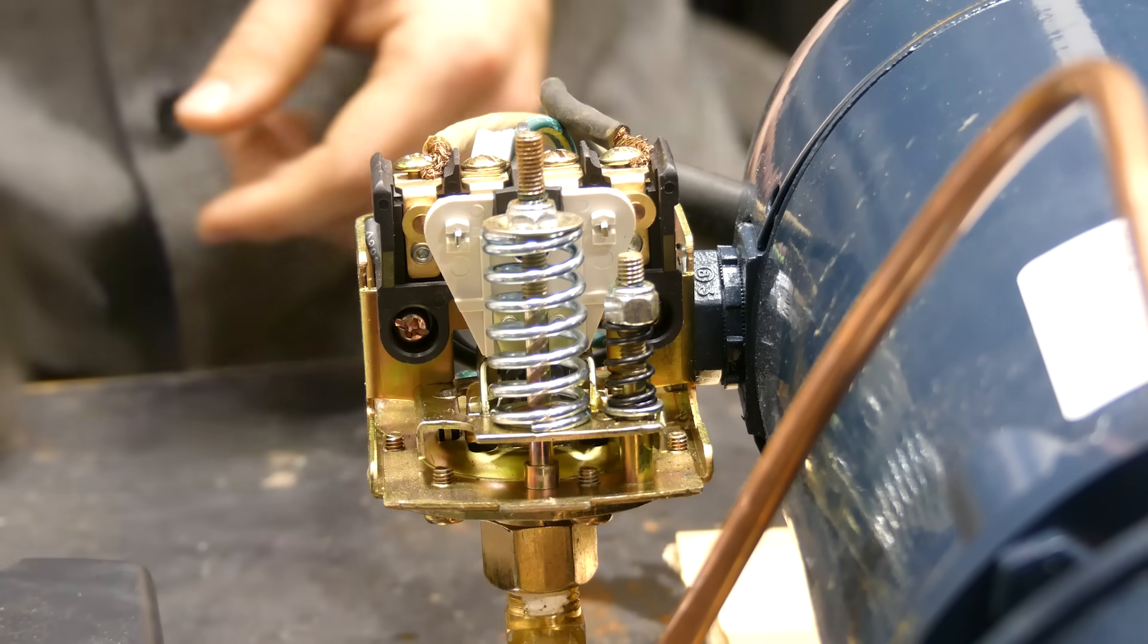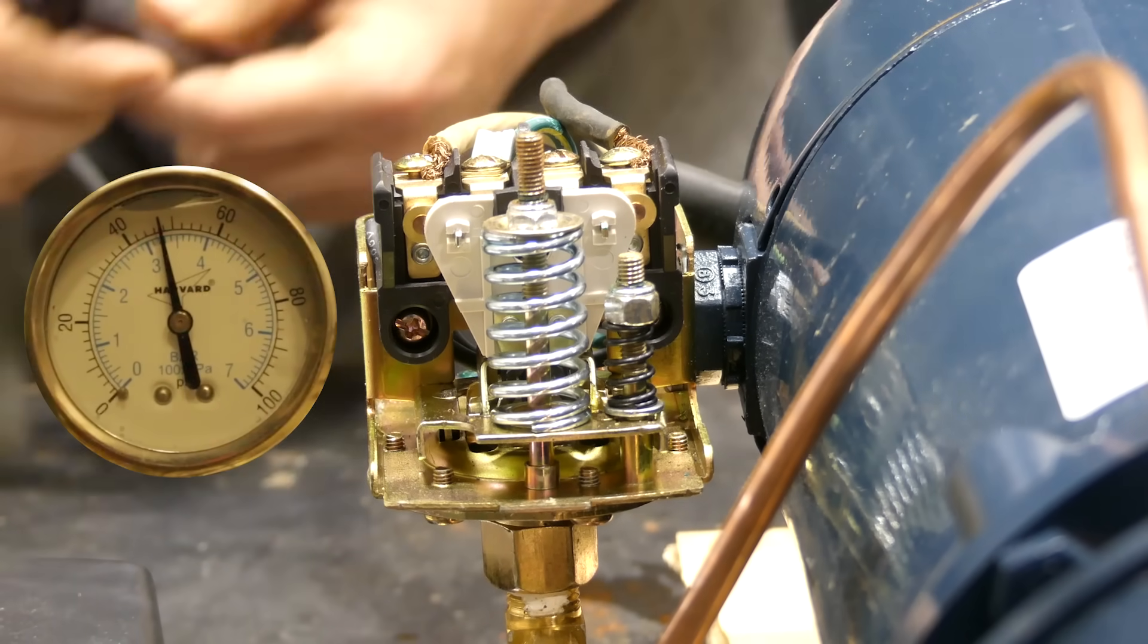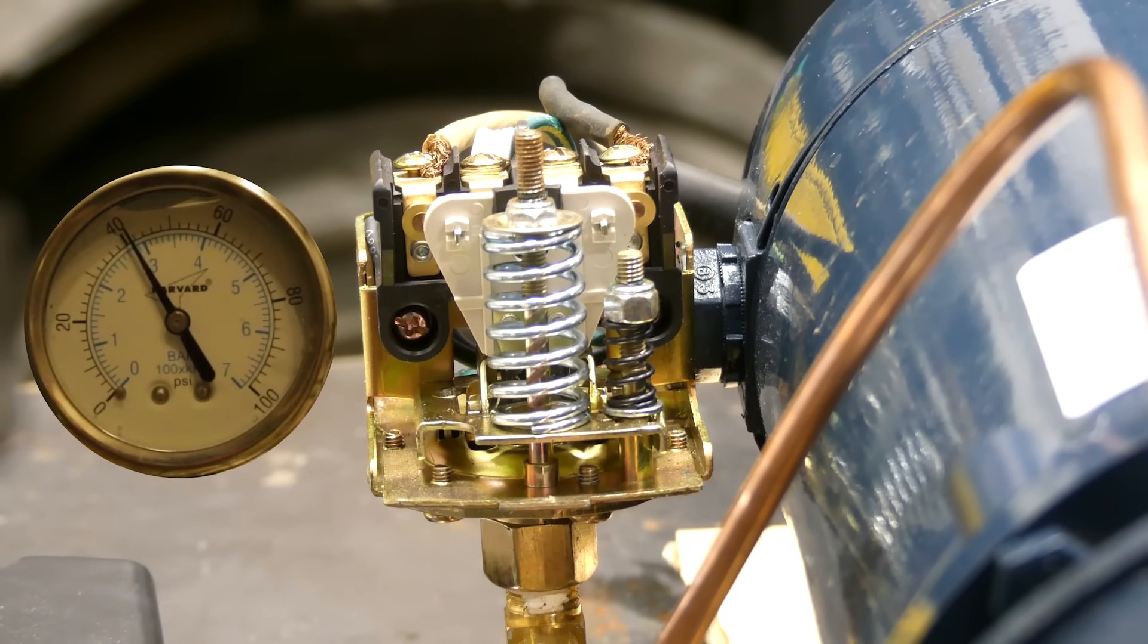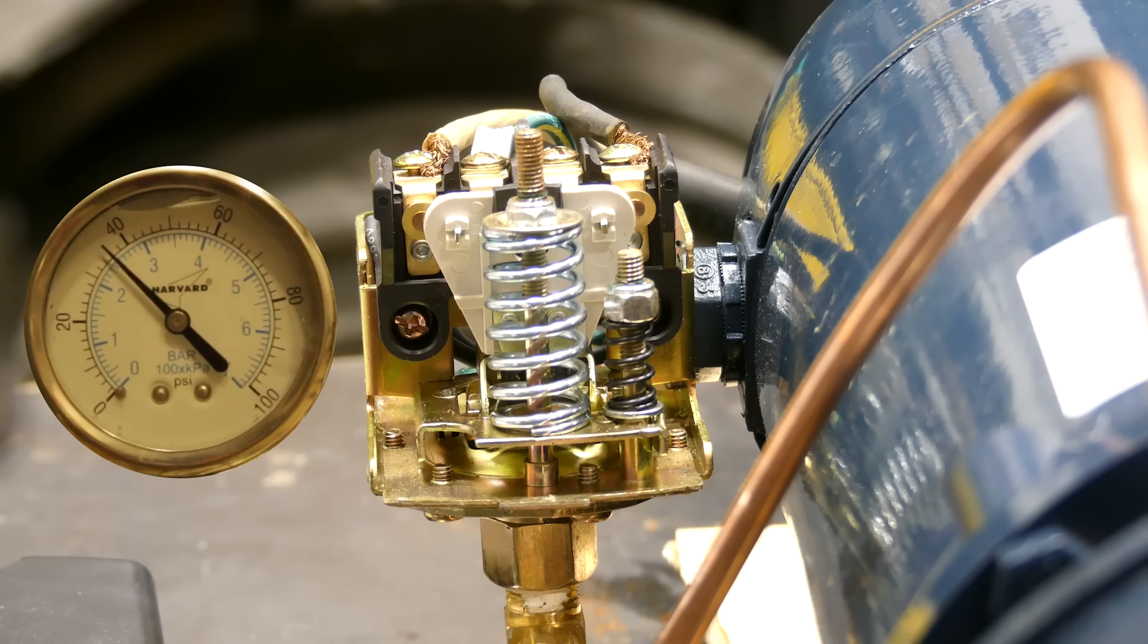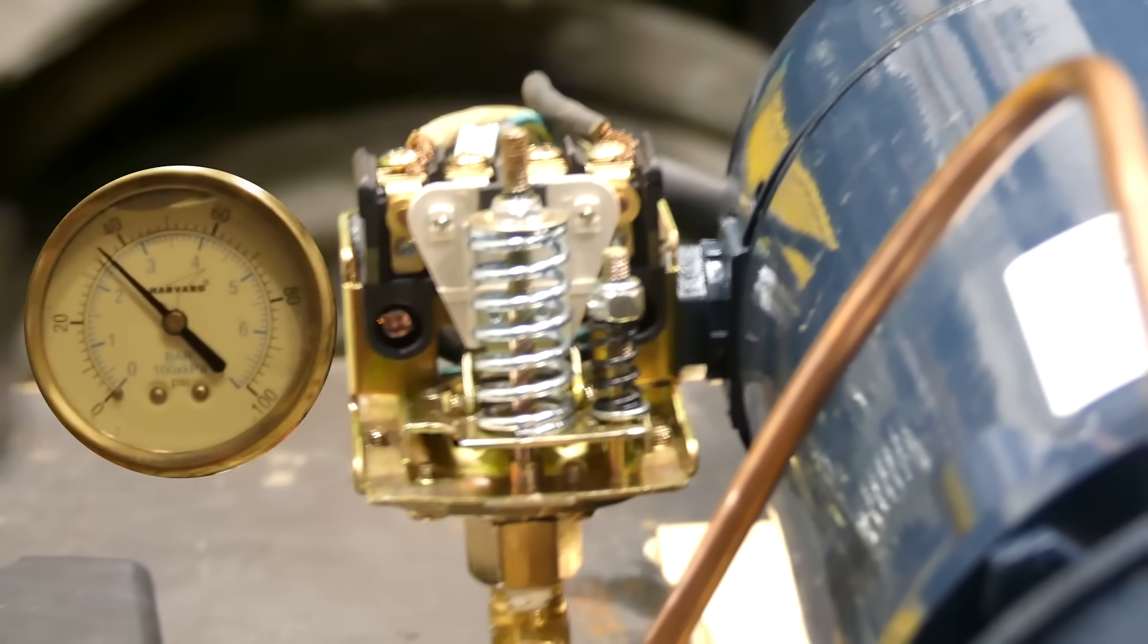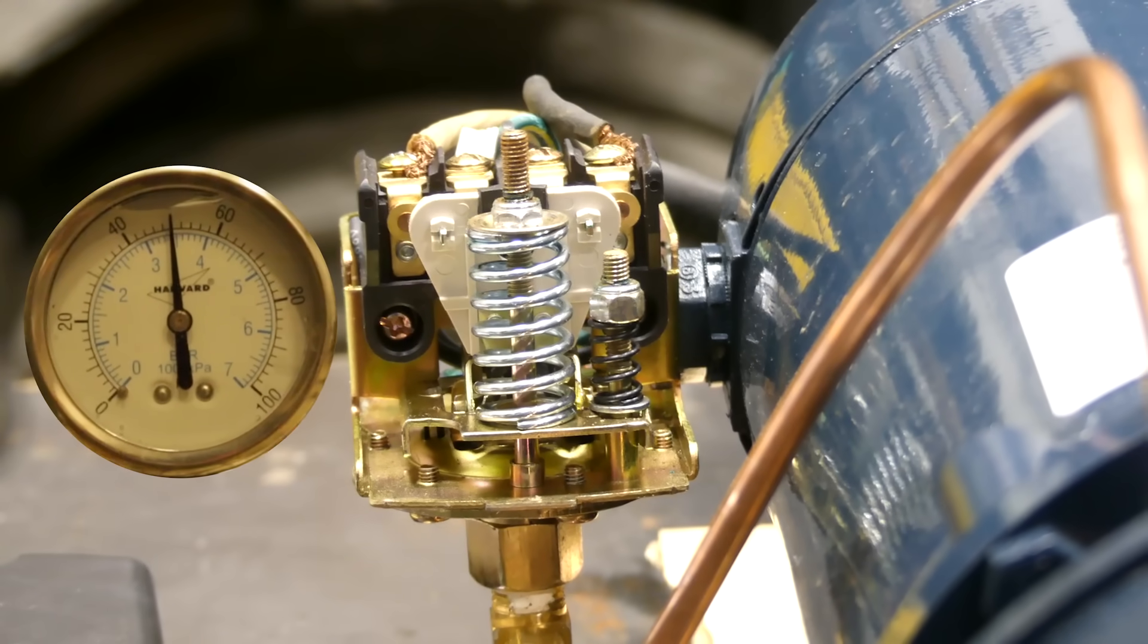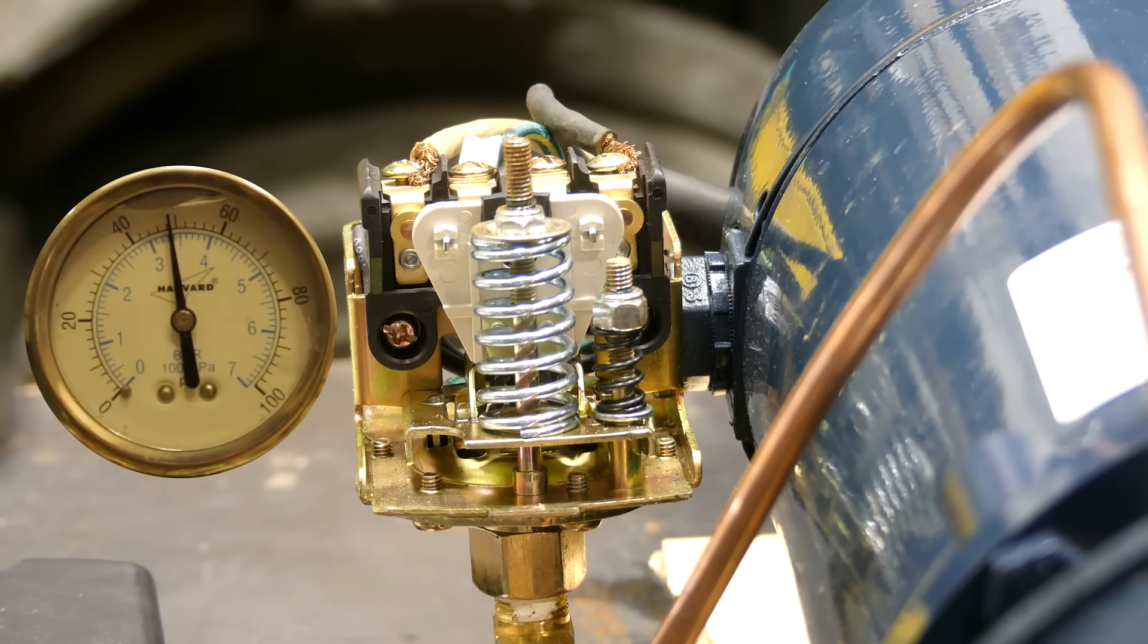And we'll also see what's going on with the pressure gauge. So you can see the pressure is dropping. Once it hits that 30 PSI mark, the pump is going to engage and it's going to build up to our 50 PSI and then shut off.